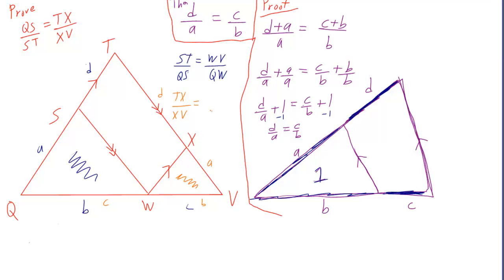The thing we're trying to prove I mean. And then what's my c? It's qw and wv is my b.